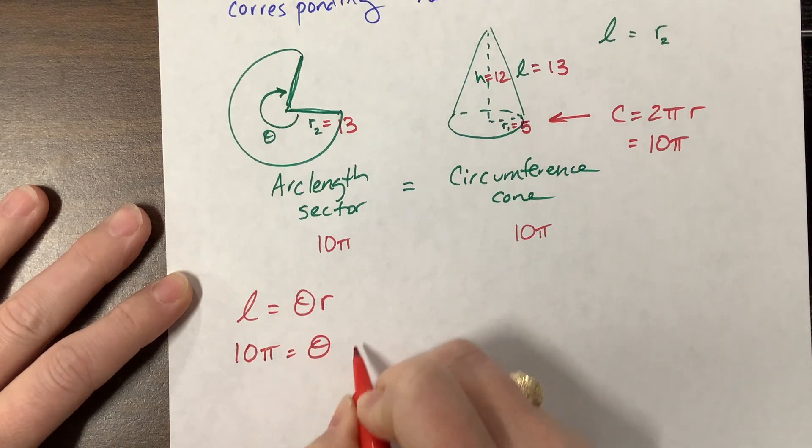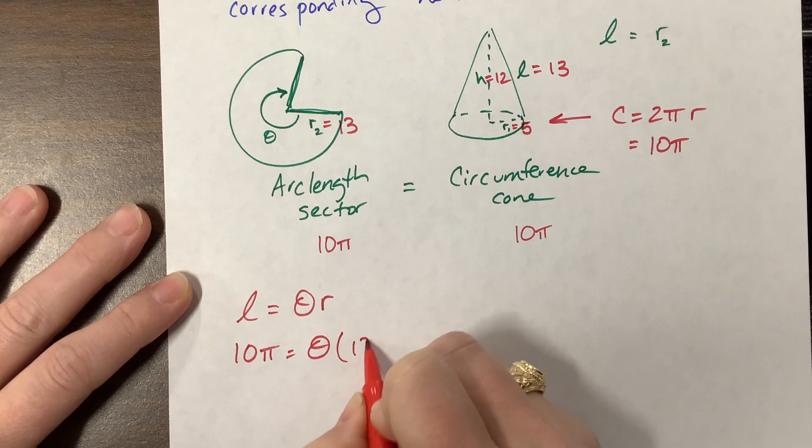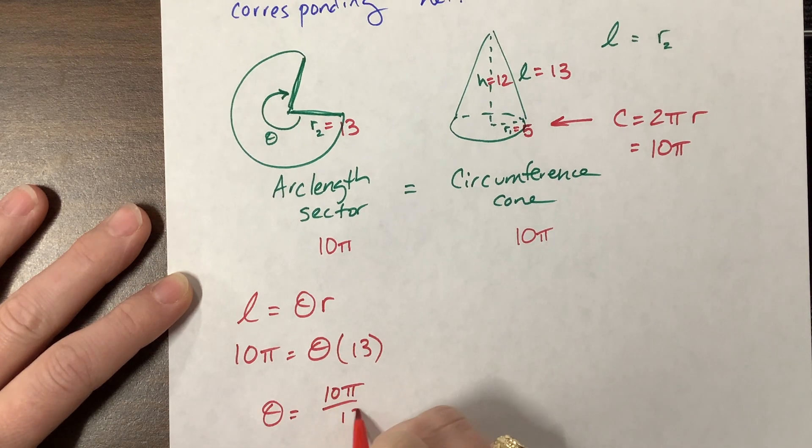We just said that the arc length was 10 pi. We don't know theta, but we do know that this radius matched the slant height of the cone. And so and that was 13. And so now theta is equal to 10 pi over 13.